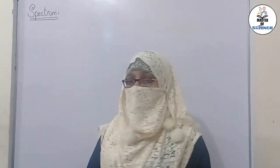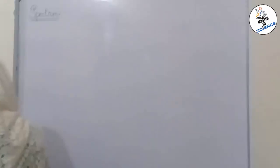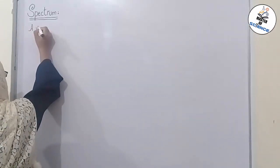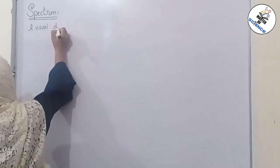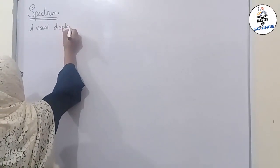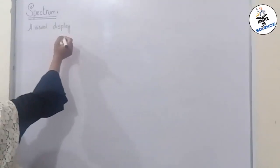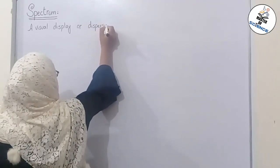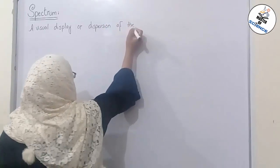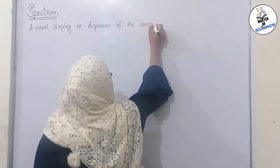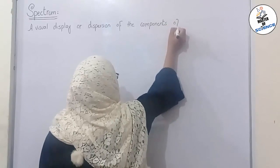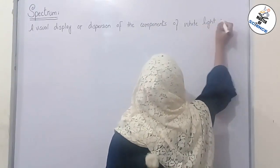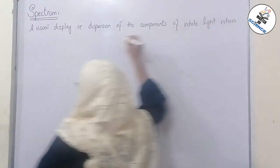If we write its proper definition, then we will say that spectrum is a visual display or dispersion of the components of white light when it is passed through a prism.